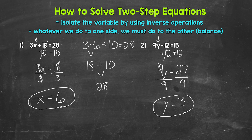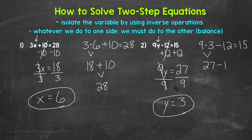Let's plug it in and see if we are correct. Plug in 3 for y: 9 times 3 minus 12 equals 15. We start with multiplication — 9 times 3 is 27. 27 minus 12 is 15, so we are correct. y equals 3.